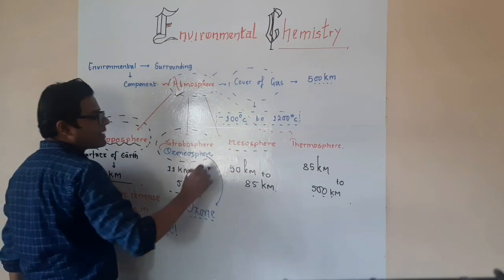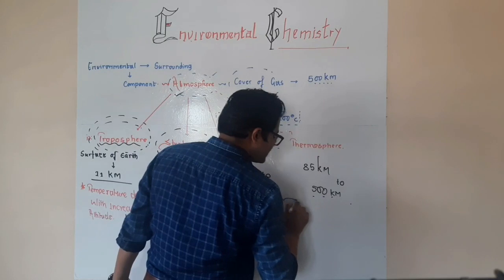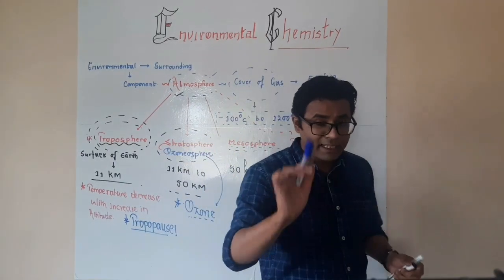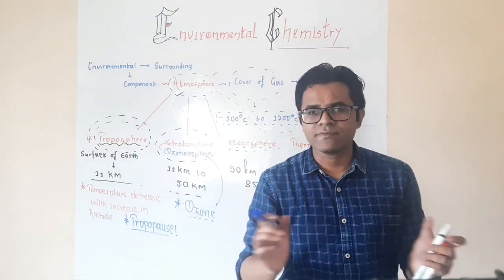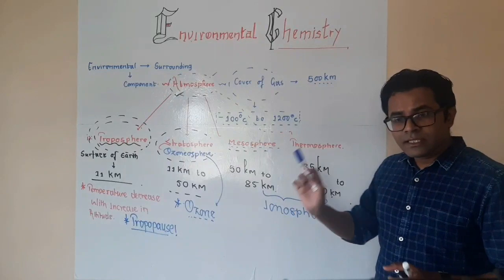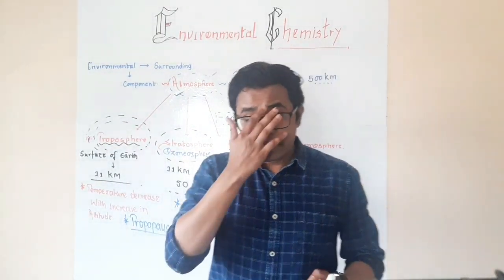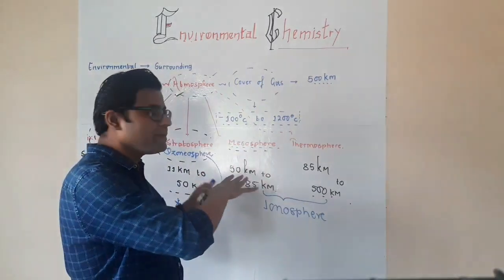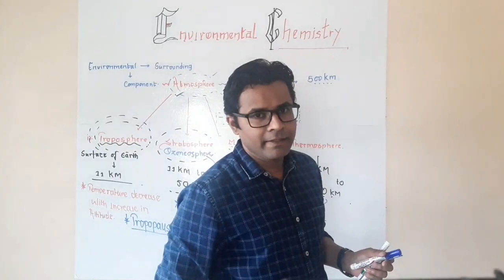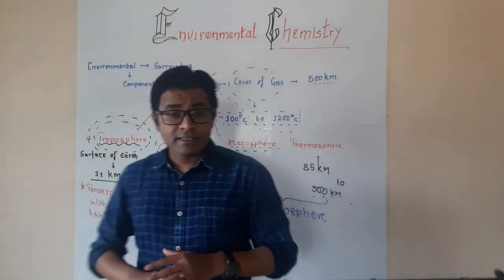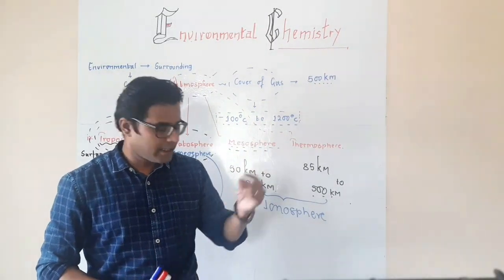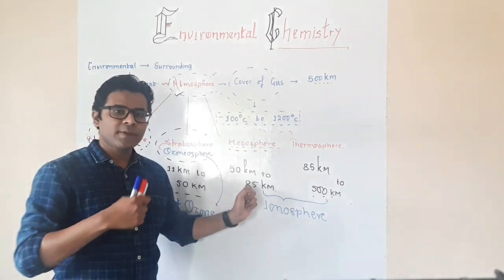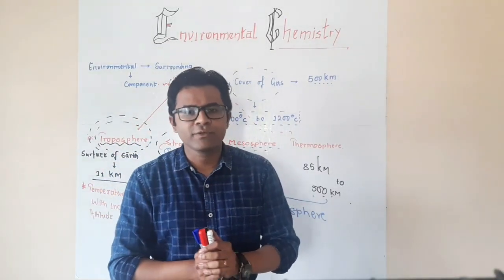The mesosphere and thermosphere are considered as the ionosphere. They are called the ionosphere because the gaseous atoms and molecules in these regions are in the form of ions. The temperature is quite high in the thermosphere and mesosphere. These are the different regions of the atmosphere: troposphere, stratosphere, mesosphere, thermosphere, and some also include exosphere.